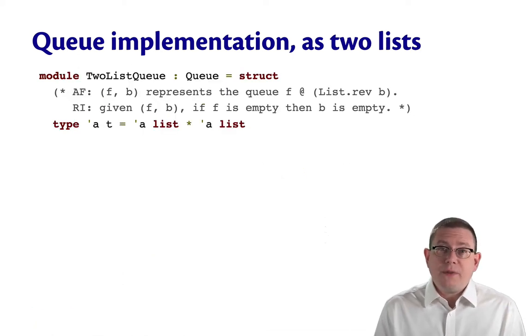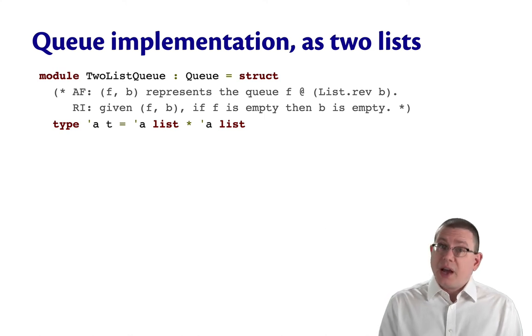But we also have our old friend, the two-list queue, that we've studied a couple times now. And here we'll come back to it a third time. Remember that with the two-list queue, we have two lists that represent the queue. Together, they represent a queue, which is the first list followed by the reverse of the second list, so the front and the back list. And we have a rep invariant, which is that if the front list is empty, then the back list has to be empty. Before, I've shown this to you in a couple different implementations, maybe with records before. Now I'm using tuples. There's no essential difference.